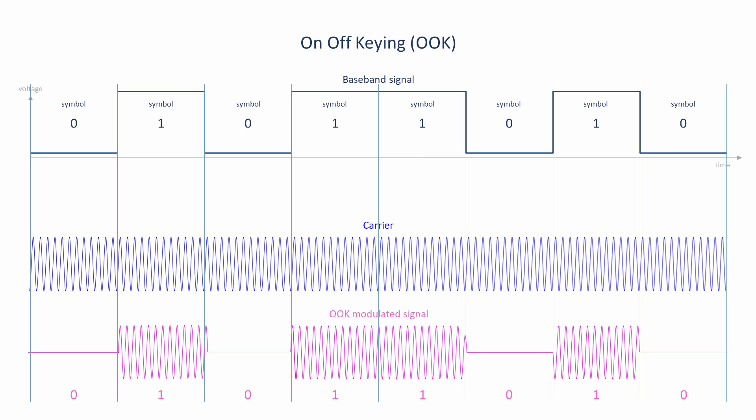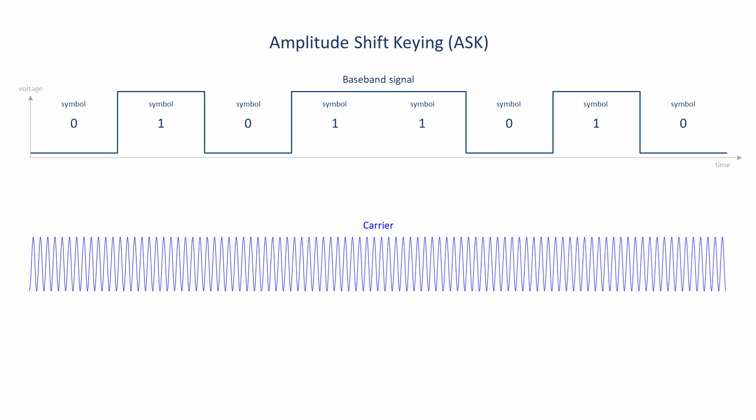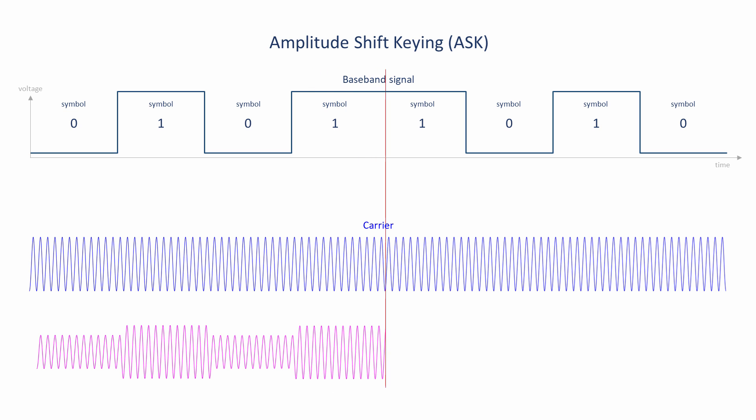Another way to encode binary data on the carrier wave is with amplitude shift keying, or ASK for short. With amplitude shift keying, the digital signal is multiplied by the carrier.